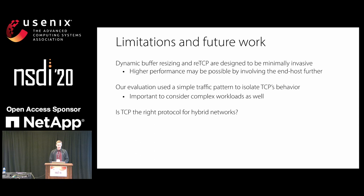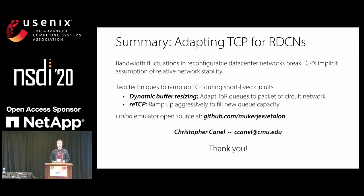Briefly on limitations: these are designed to be minimally invasive techniques, so more performance is possible if you're willing to engineer more control into your network. In summary, I've proposed two techniques for adapting TCP to rapid bandwidth fluctuations in a reconfigurable data center network: dynamic buffer resizing, adapting top-of-rack switch queues to the network currently in use, and RETCP, a new TCP variant that ramps up aggressively to fill new capacity. The emulator is available open source — please ask any questions.